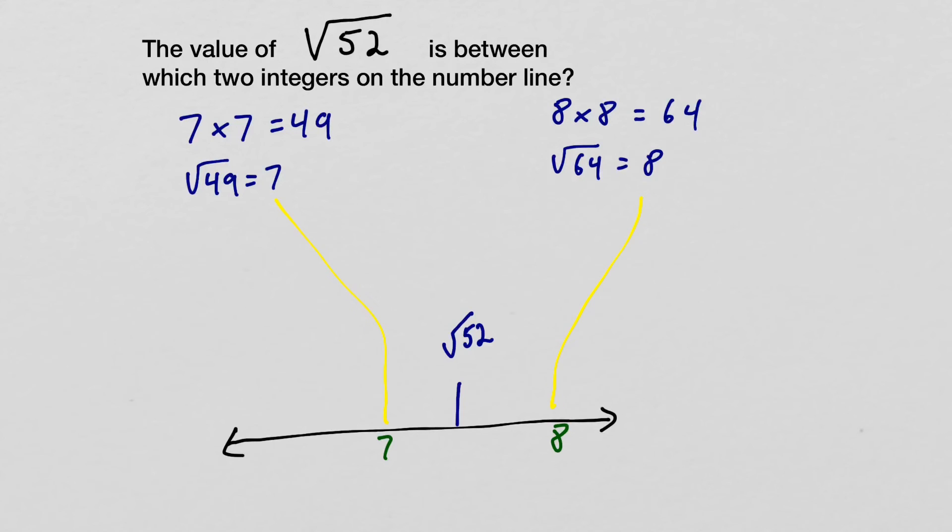Now, if that doesn't make sense, if why we know that the square root of 52 falls between there, you may consider looking at it in terms of the root. 8 is the same as the square root of 64, and 7 is the same as the square root of 49.